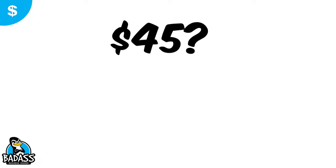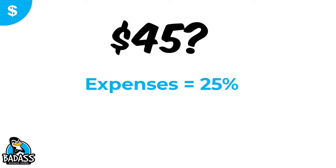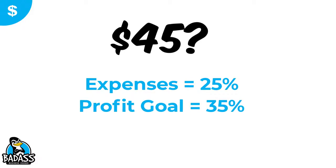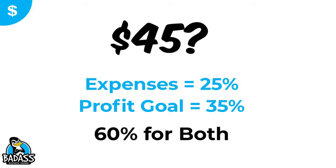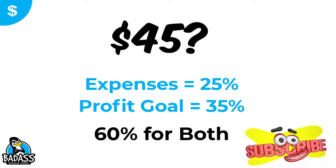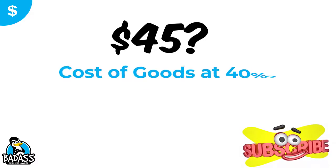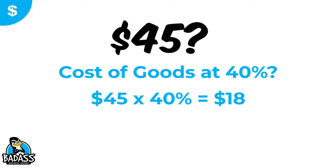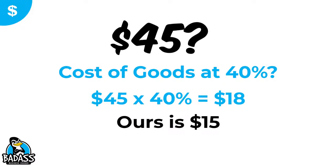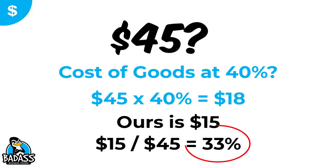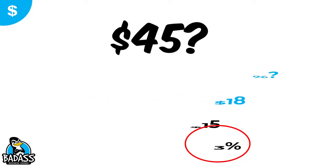If we take the $45 selling price, expenses are 25% and profitability is 35%, that's a total of 60%, which leaves 40% for cost of goods. So 40% of $45 means costs can be as high as $18. Our costs are $15, so we're ahead of the game. In fact, $15 divided by $45 means our costs are only running 33% — so far, so good.